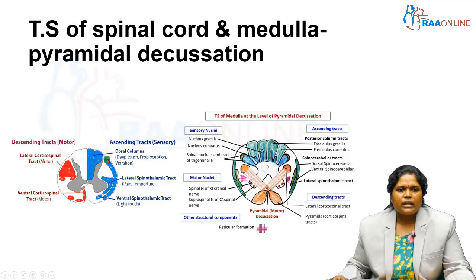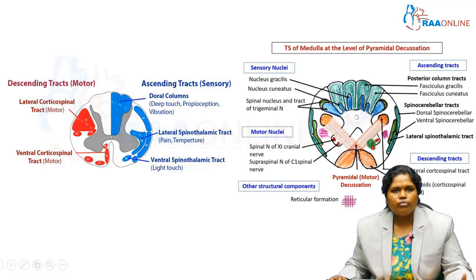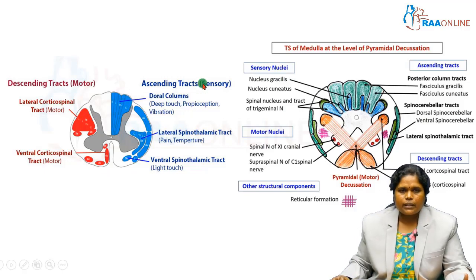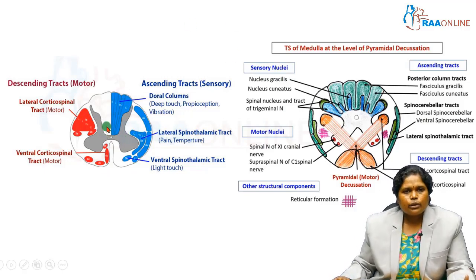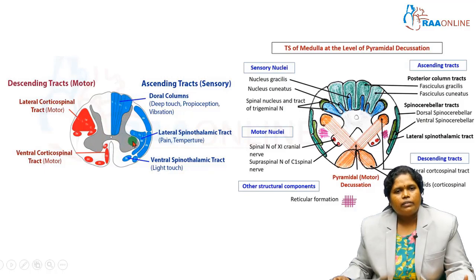Here you can see the picture of the spinal cord — this is the transverse section of the spinal cord, and this is the transverse section of the medulla at the level of pyramidal decussation. You have already studied the transverse section of the spinal cord. Here you can see the central canal of the spinal cord and the surrounding gray matter, which has the ventral horn or anterior gray column, and the dorsal horn or posterior gray column.